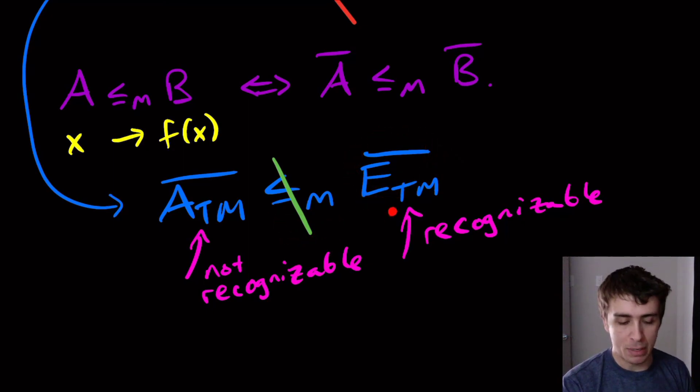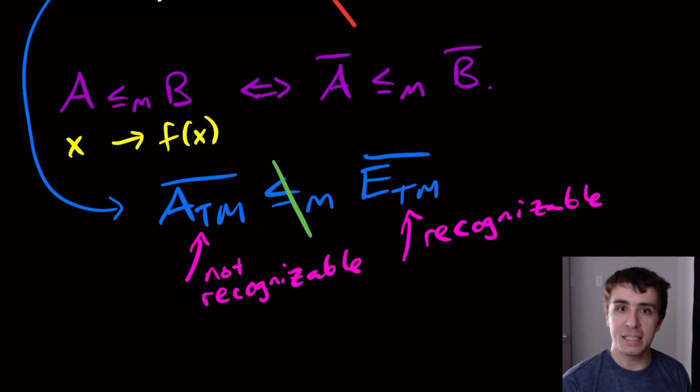Then the recognizer, because of the mapping reduction, will give this same answer to over here, which would imply a recognizer over here. And we know it's not recognizable. So therefore there's no mapping reduction from ATM to ETM.